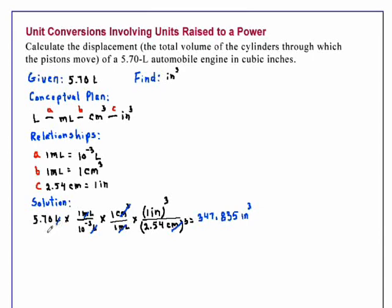When we do that, we realize that the one datum that we're given, 5.70, has three significant figures. Each of the conversion factors is a defined quantity and therefore is exact, so we must round our number to three significant figures. When we do that, we obtain a final answer of 348 cubic inches.